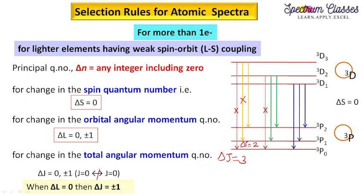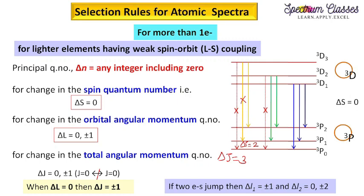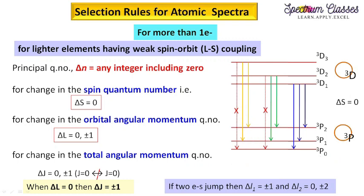When delta L equals 0, then delta J equals plus or minus 1 is applicable only; 0 is not applicable. One more point: if two electrons jump simultaneously, then for one electron delta L would be plus or minus 1, and for the second electron also plus or minus 1. The net result would be either 0 or plus or minus 2, which violates the condition that delta L must be plus or minus 1. This case of two-electron transitions will be explained further in the next slide.